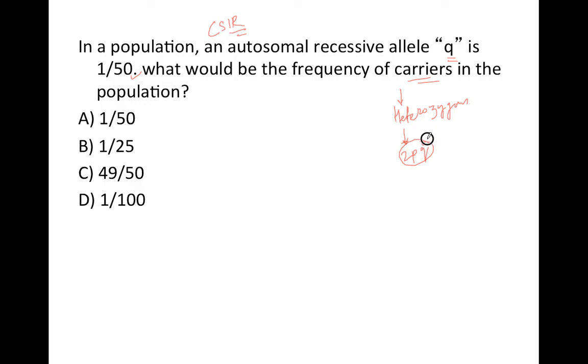So if we know q, we can find out p, and so we can find out 2pq. Let's see how. p plus q is equal to 1. p would be 1 minus 1 by 50. So p is 49 by 50.